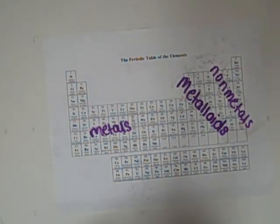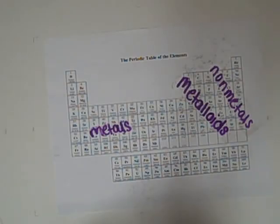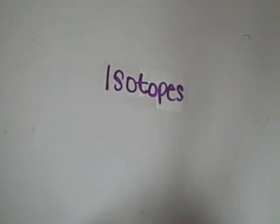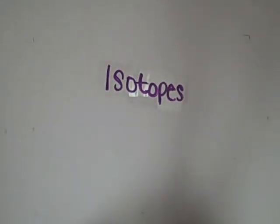Can you tell me what isotopes are? Yes, isotopes are different types of atoms of the same chemical element that have a different number of neutrons.